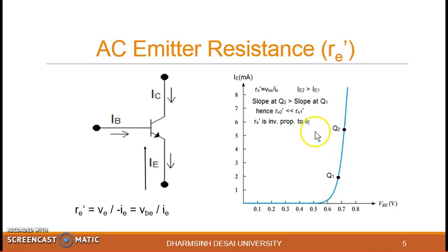Now slope also if you find at this point the slope at Q2 is going to be greater than slope at Q1. So that is definite slope is nothing but the ratio of delta IE upon delta VB. The inverse of that is nothing but delta VB over delta IE that is nothing but small VB over small IE. So you can say that your RE2 is going to be less than RE1. Basically your RE dash is inversely proportional to IE.